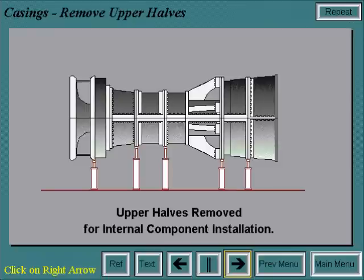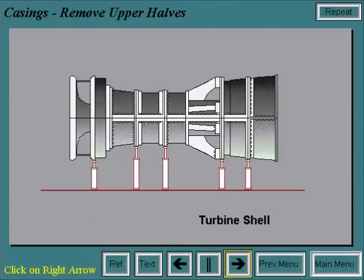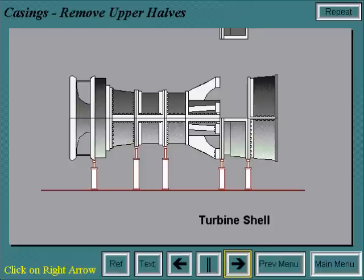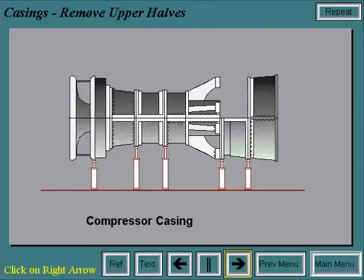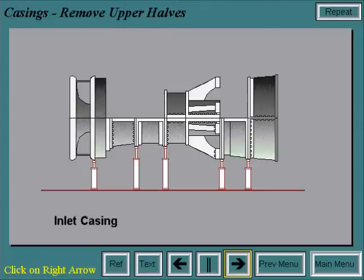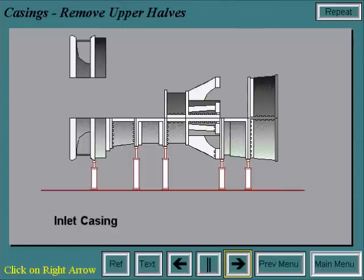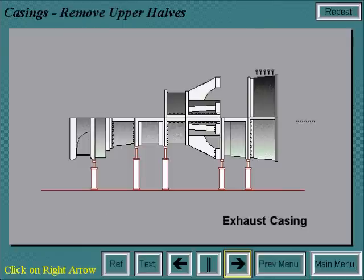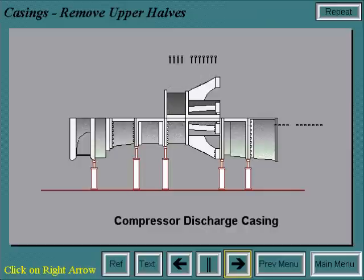The upper halves of the casings are removed to allow for internal component installation. All vertical and horizontal bolts are removed and the casings are lifted off one at a time in the following sequence: first the turbine shell, then the compressor casing, then the inlet casing, then the exhaust casing, and finally the compressor discharge casing.